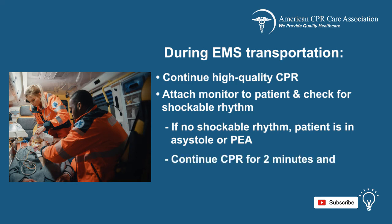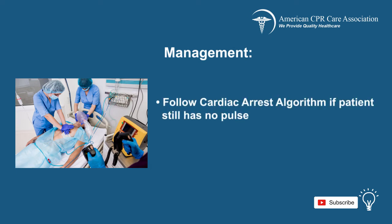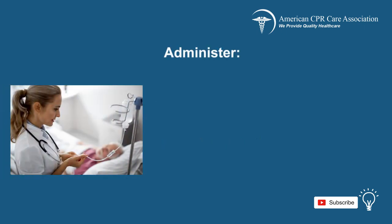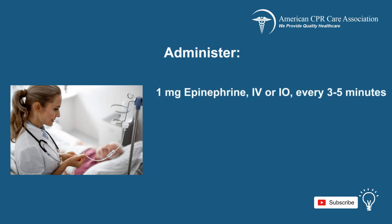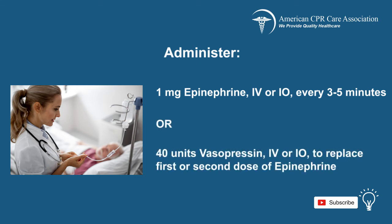Continue CPR for 2 minutes and obtain IV or IO access. For management of the patient once at the hospital, initiate the cardiac arrest algorithm if the patient still has no pulse and does not respond to BLS. Get a code team in place. Once IV or IO access has been obtained, administer epinephrine at a dose of 1 mg via IO or IV access and repeat every 3 to 5 minutes. Alternatively, give vasopressin at a dosage of 40 units via IO or IV to replace the first or second dose of epinephrine.